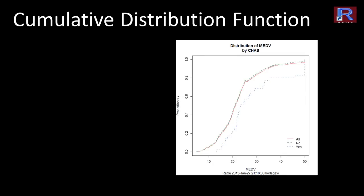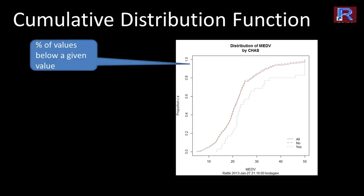Another good indicator of how data is spread is the cumulative distribution function, which is a graphical view of the complete percentile table. It indicates the percentage of values below a given value — which is exactly the percentile for that value. Here, the variable being plotted is the median household price.